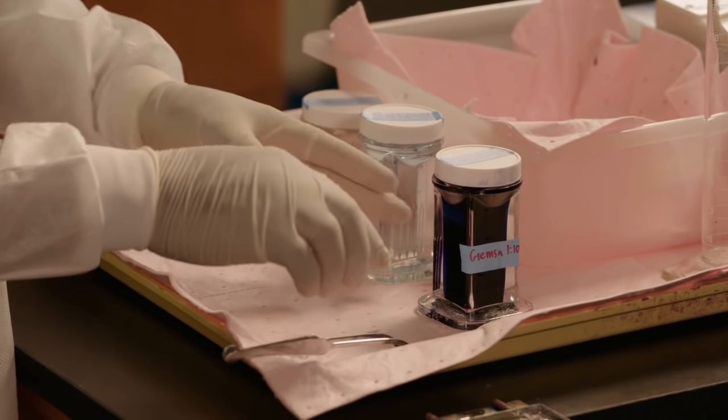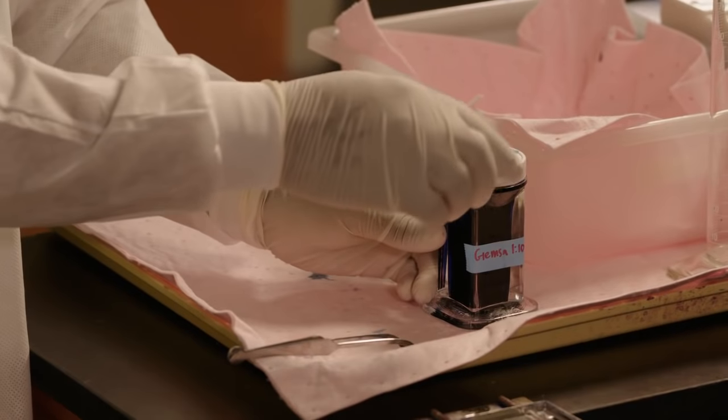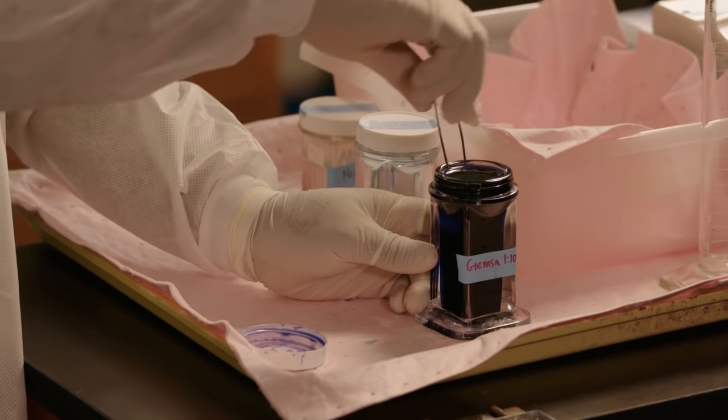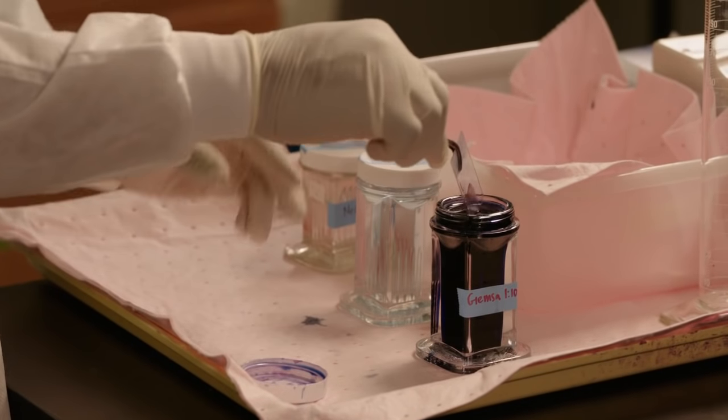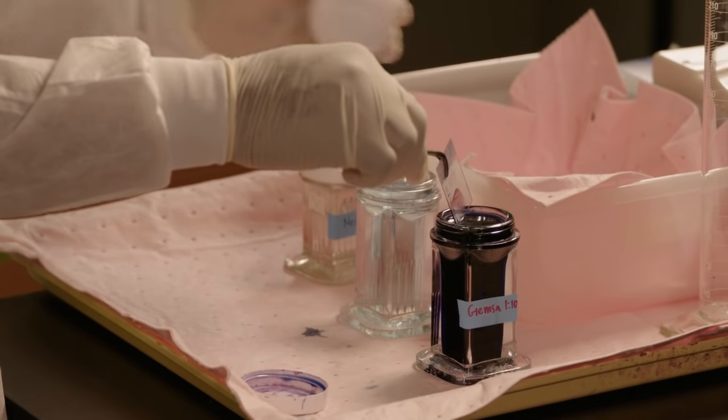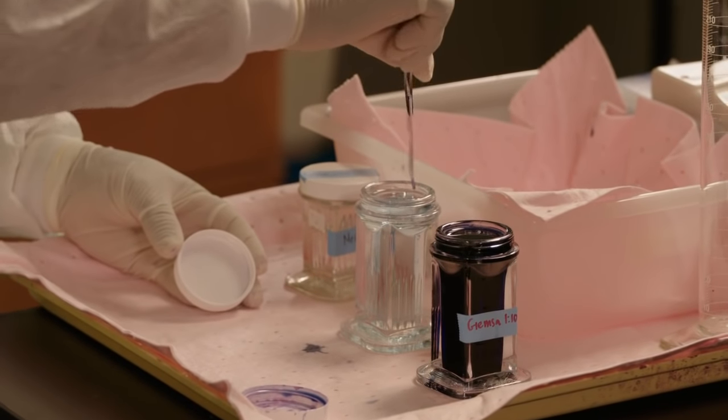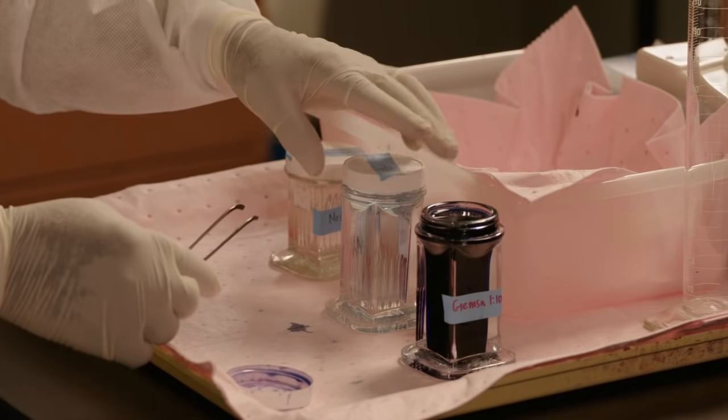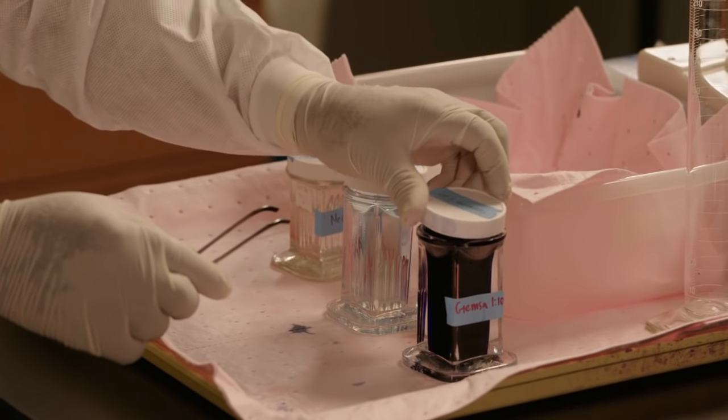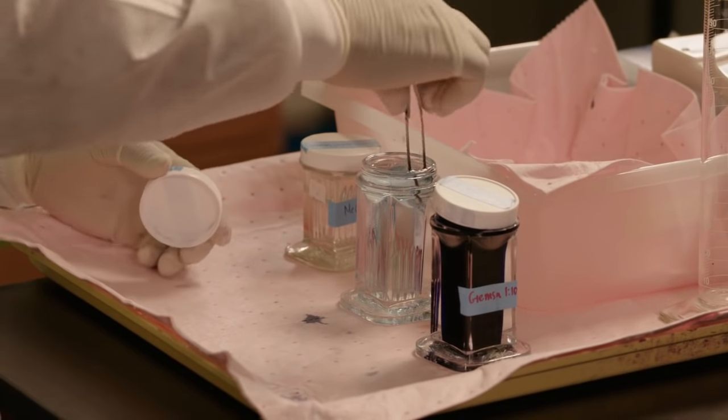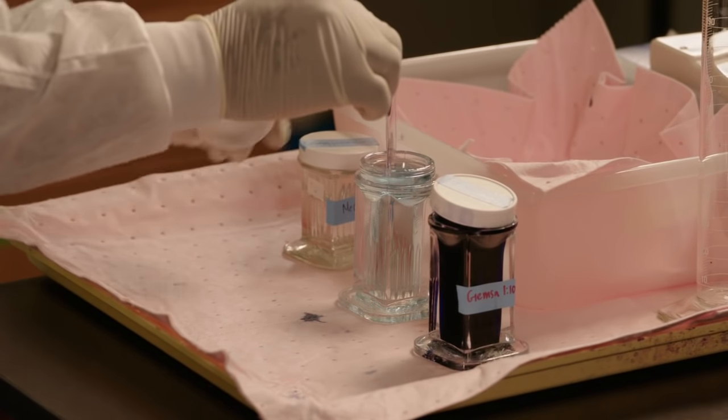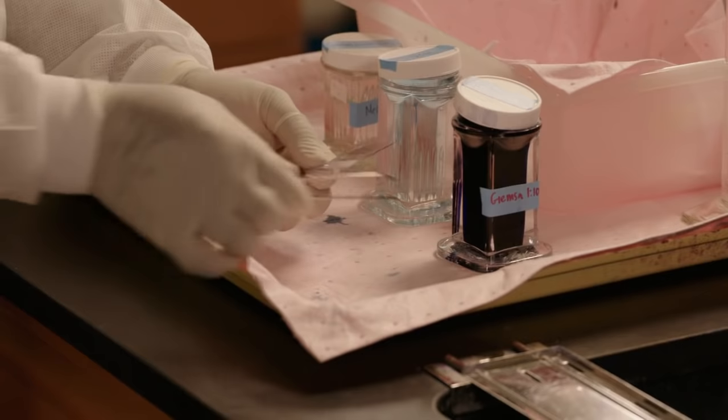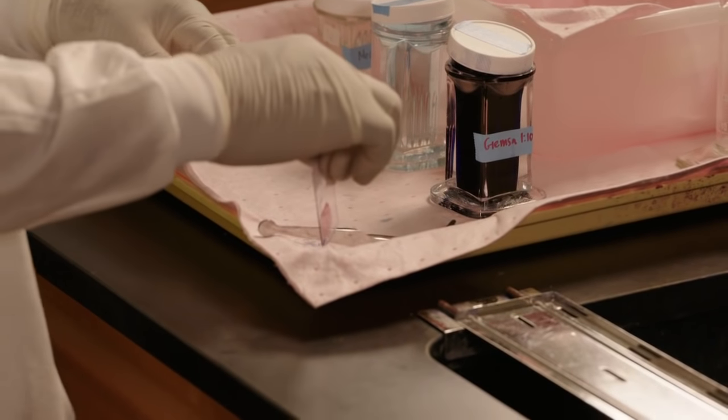At the end of the 20 minutes staining period in the working Giemsa stain, by means of a forceps, remove the stained slide and transfer it into a coupling jar containing water for rinsing the slide. Rinse it for 30 seconds. And then remove it from the rinsing water and then send it to the drying rack for it to air dry.